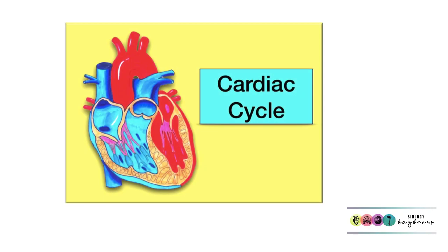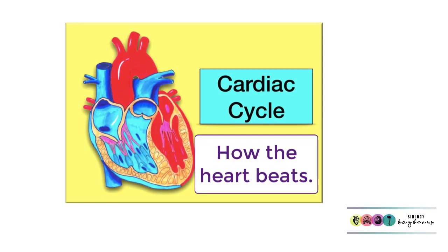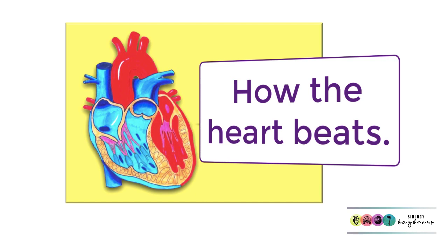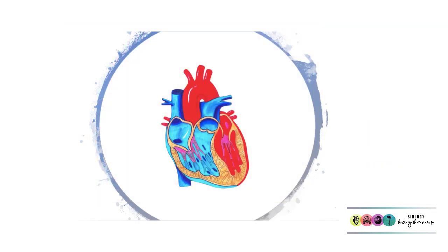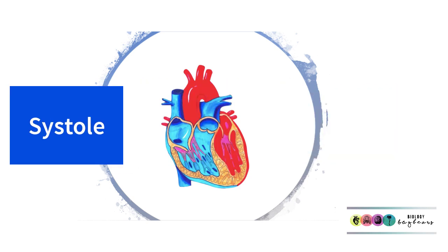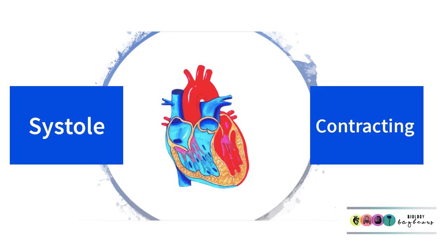The cardiac cycle — a video to help you explain in a very basic way how the heart beats. The heartbeat or the cardiac cycle involves two stages: diastole, where the heart is relaxed, and systole, where various parts of the heart are contracting.